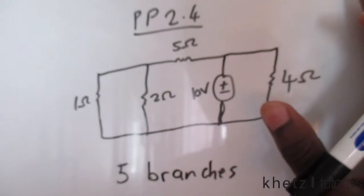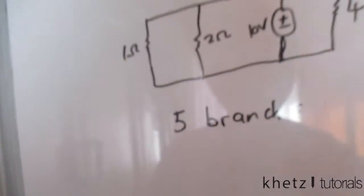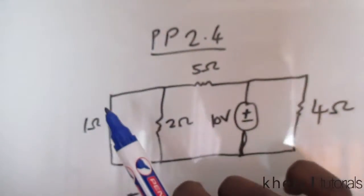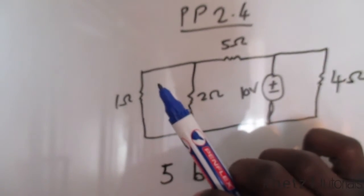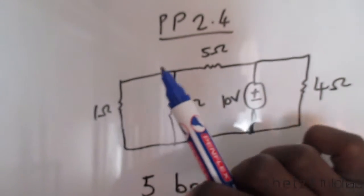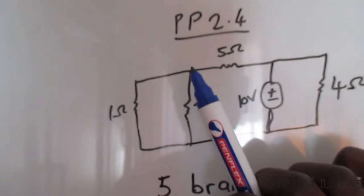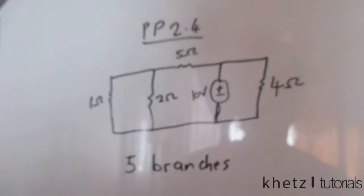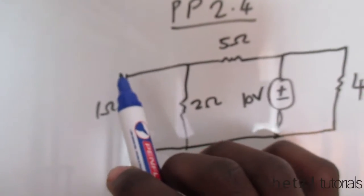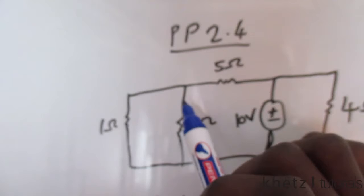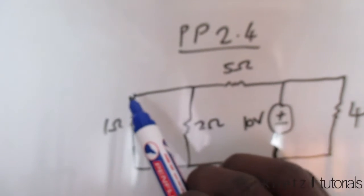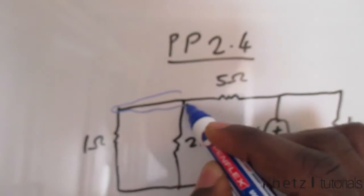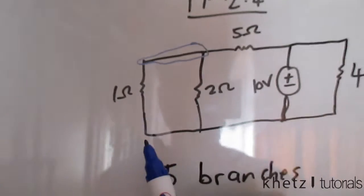The next part asks you to identify the number of nodes. A node is simply defined as a connection between two branches where there aren't any other branches between the connection. If you look at the connecting wire here and this terminal of the resistor — there's no other branch in between, so this qualifies as a node.